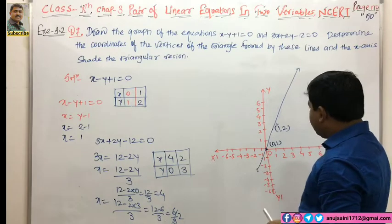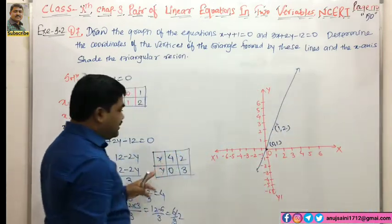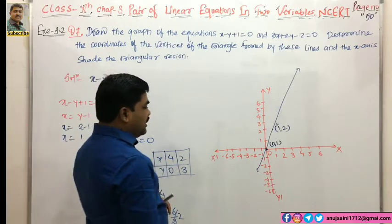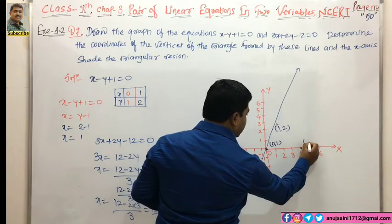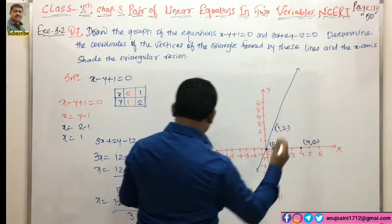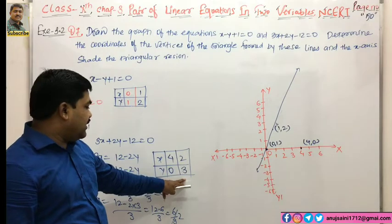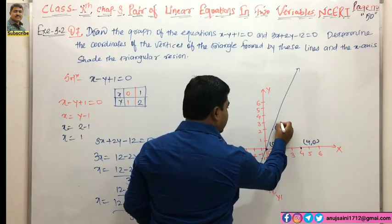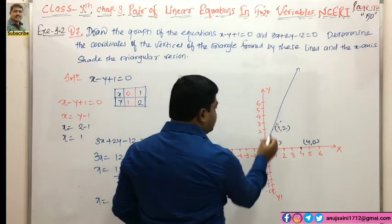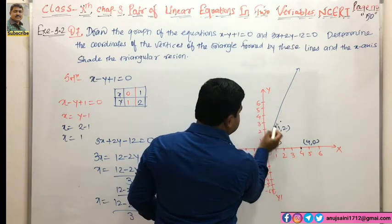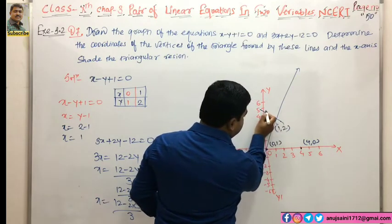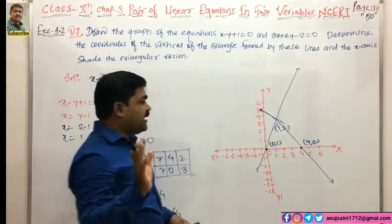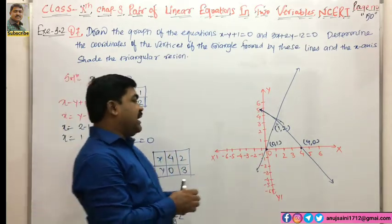Second equation के लिए: x की value 4, y की value 0 - point (4, 0) plot करते हैं। फिर x की value 2, y की value 3 - point (2, 3) plot करते हैं। यह graph अगर रहता तो बहुत अच्छे तरीके से इसको draw कर सकते हो।